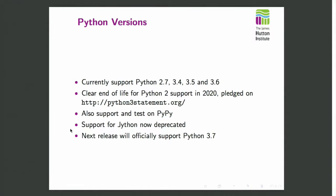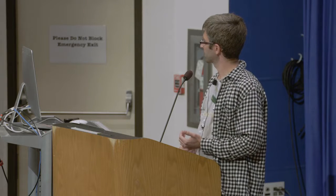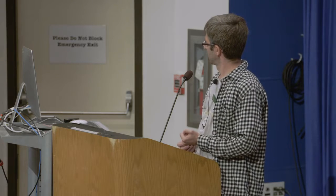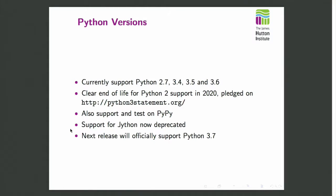Briefly on Python versions: those of you who work with Python will be well aware that Python 2 and Python 3 are not fully compatible. We are still supporting Python 2.7 and will do so until the year 2020, when Python 2.7 support itself ends — so we've set a clear line in the sand. We've signed up to a mission statement that a lot of other scientific programming packages have adopted. We also test on another Python implementation called PyPy, which optimizes your code as you run and can make it much faster. Another Python implementation, Jython, running on the JVM — we've sadly had to deprecate support for that, as very few people used it and it wasn't maintaining full compatibility with the reference implementation.